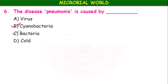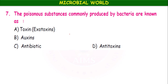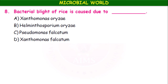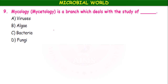The poisonous substances commonly produced by bacteria are known as toxins or exotoxins. Bacterial blight of rice is caused by which organism? The name 'bacterial blight' — it is caused by Xanthomonas oryzae (Xanthomonas varizae). Oriza sativa is the scientific name of rice. Xanthomonas oryzae is the bacterium which causes blight disease in rice.